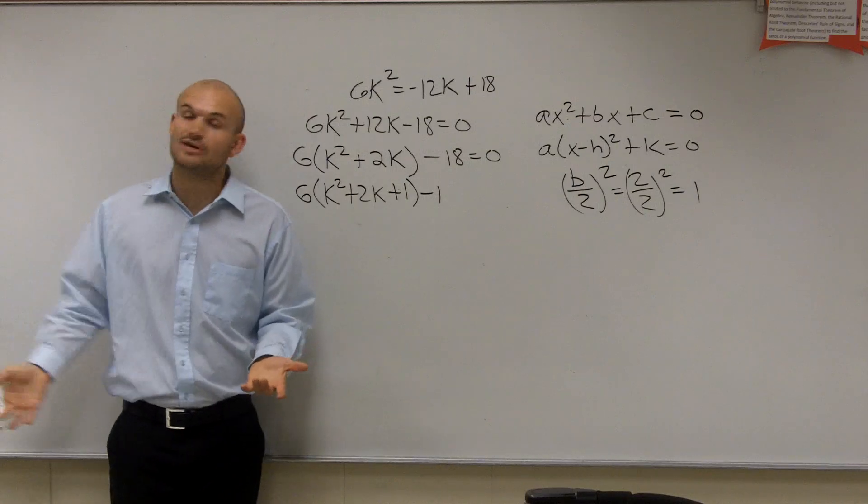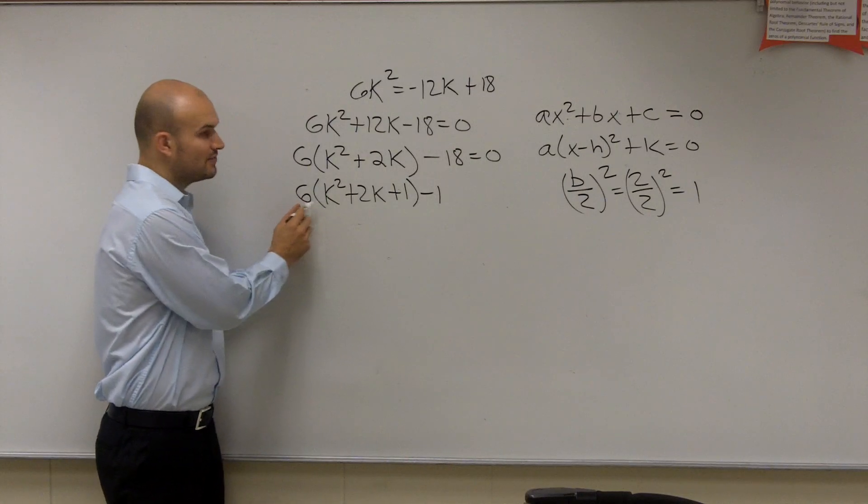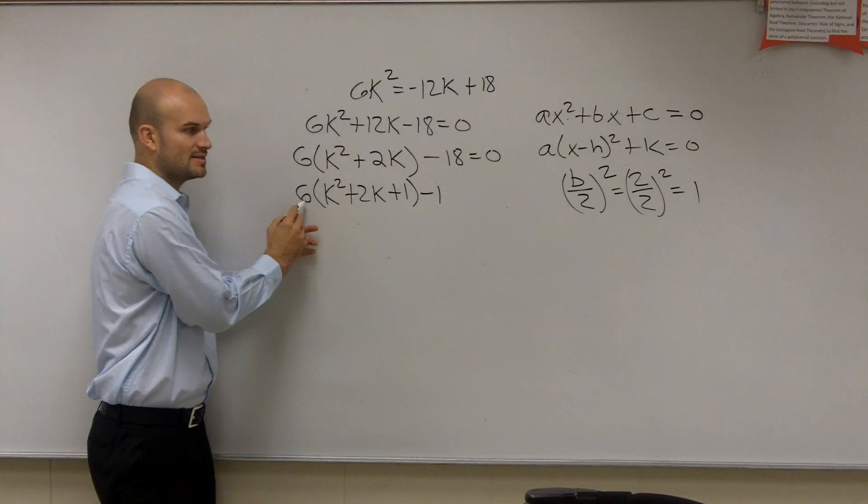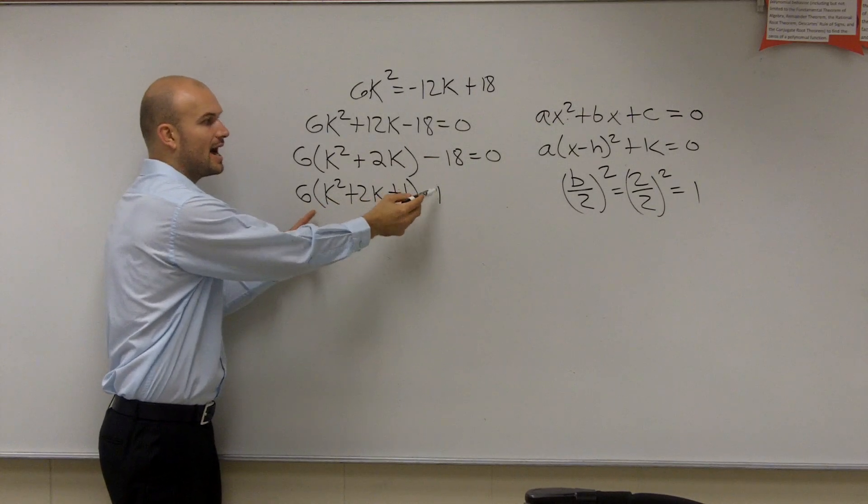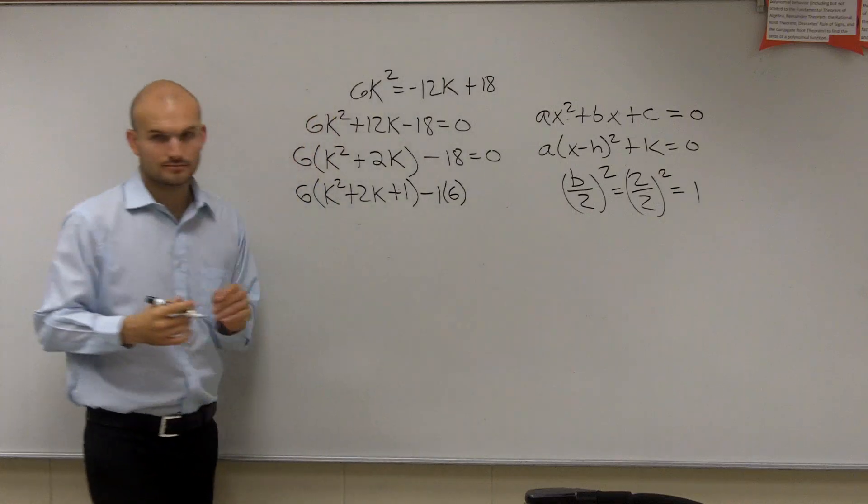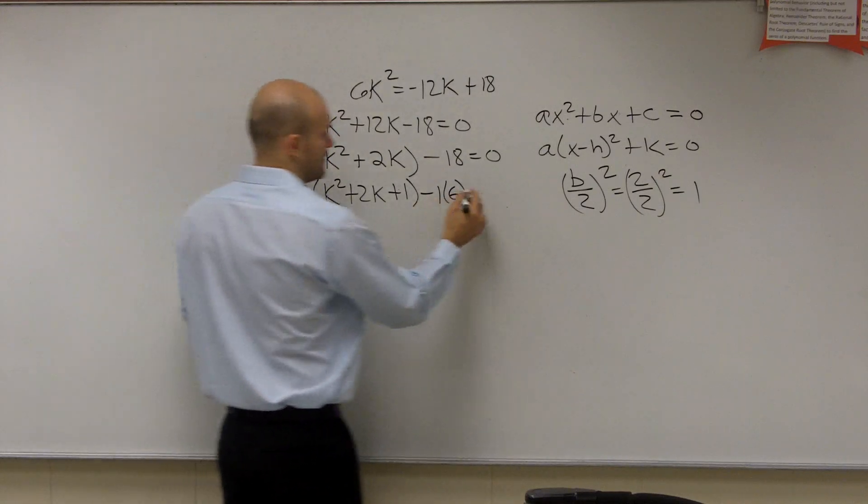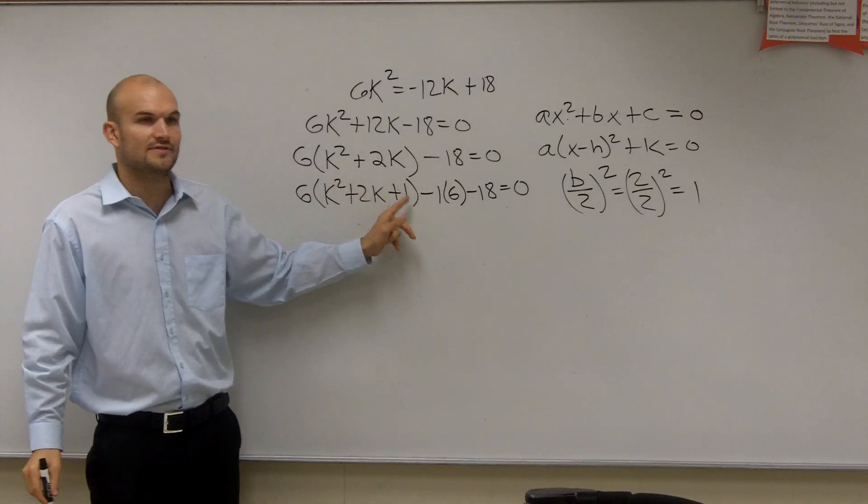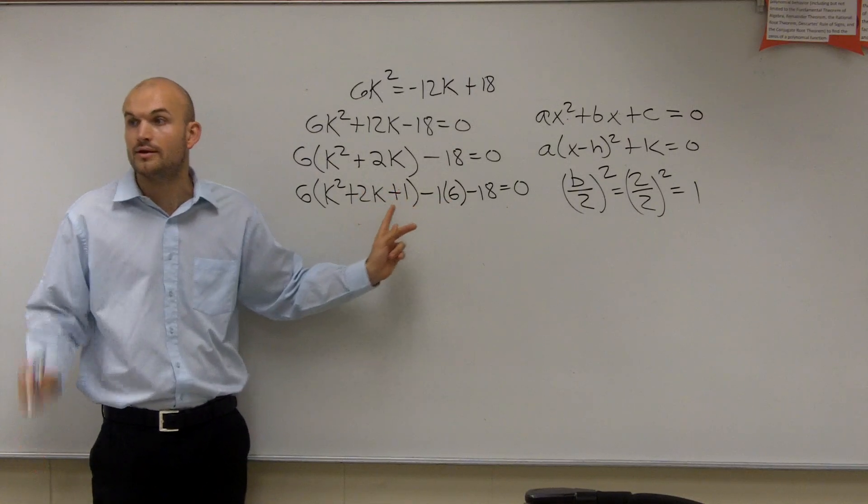But here comes the tricky part, which you guys always have to remember. This is not really adding 1 on this equation. This is a 1 being multiplied by 6. So if I'm going to subtract 1, I also have to multiply that by 6. Minus 18 equals 0. That's the most common mistake right there. Students forget if there's an operation that's happening to that 1.